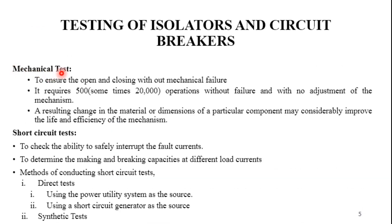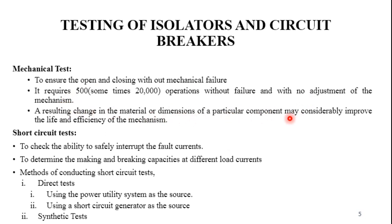The mechanical test is done to ensure the circuit breaker opens and closes without any mechanical failures. It requires at least 500 operations without any failures, and sometimes up to 20,000 operations with no adjustment of the mechanism. Any change in material or dimensions of a particular component may considerably improve the life and efficiency of the mechanism.